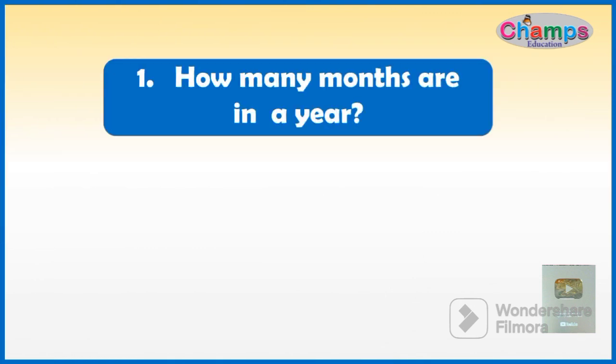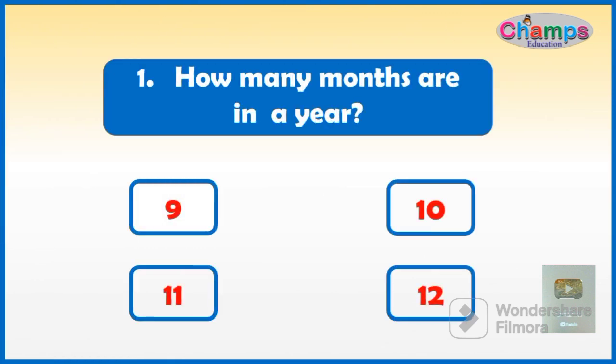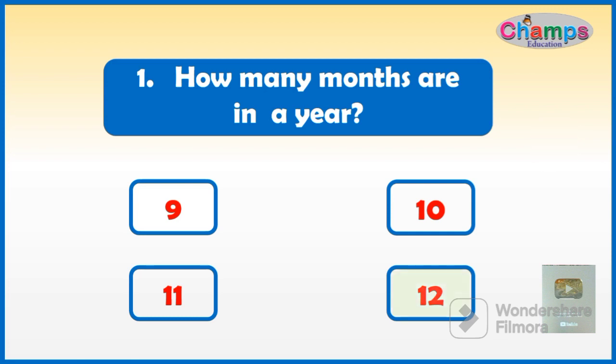How many months are in a year? Options: 9, 10, 11, or 12. And your time starts now. The correct answer is 12.